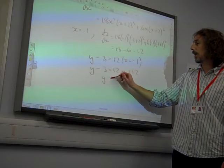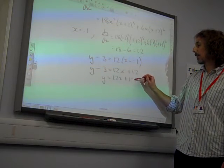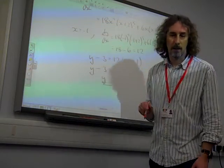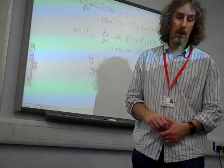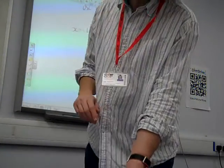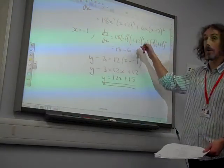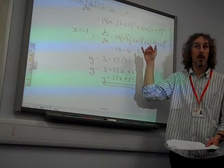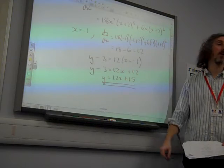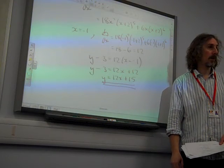They wanted it in the form y equals mx plus c. That's 12x plus 12, isn't it? So y equals 12x plus 15. That's it. That's our five marks. You've got three marks for just getting as far as the gradient equals 12. That's what we're looking for. The last two were putting it into the equation and doing that.